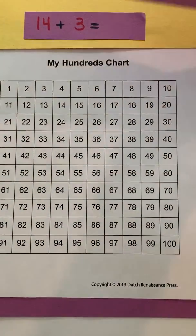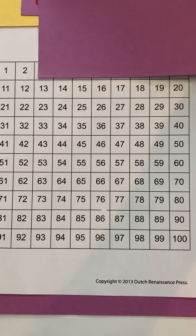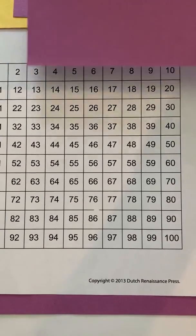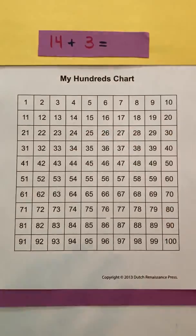You can even just draw sections sometimes. Like what you could do is just draw, like if I'm starting at 14, you could just kind of draw a couple of boxes like from here and just show 14 and then you can count over. And maybe you just draw your 14 and count over three. You don't have to draw the whole hundreds chart.